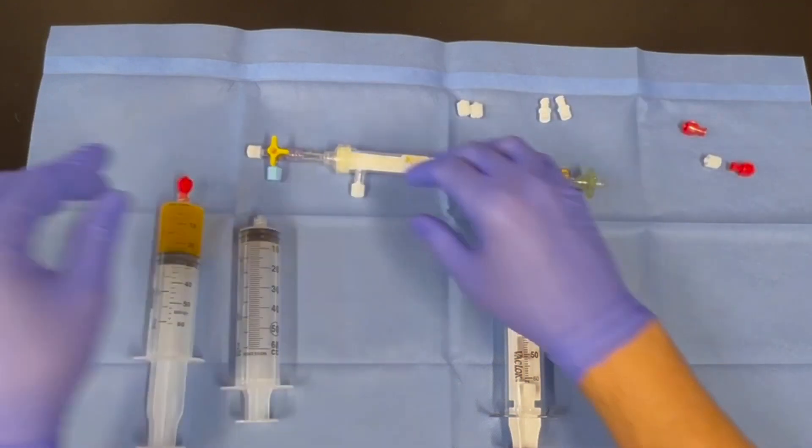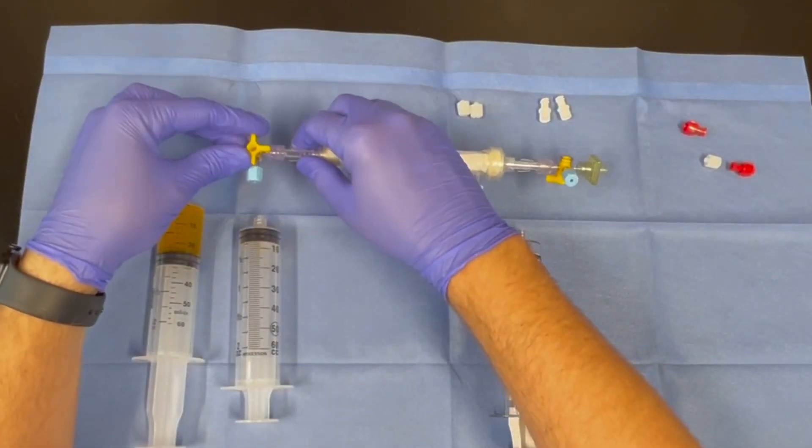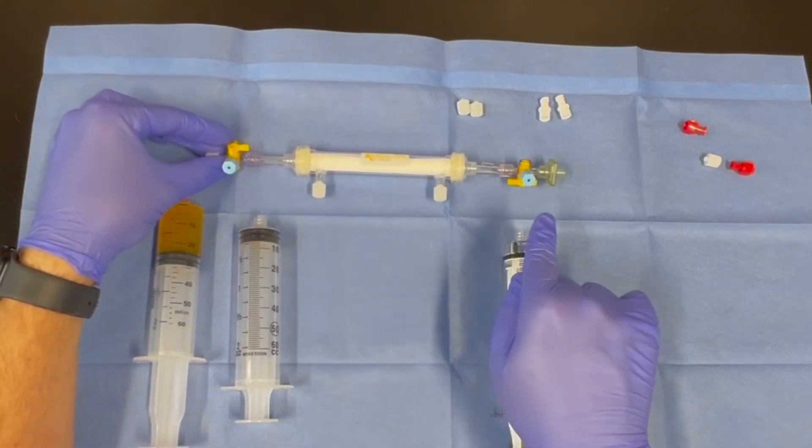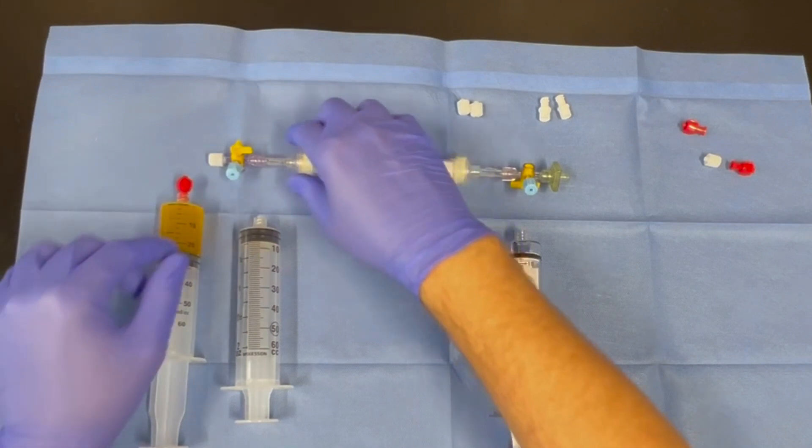Make sure that the 360 degree luer lock attachment is fully tightened. Remove the white cap from the end of the green filter. Move to the left side of the filter and confirm that the blue cap is angled slightly up towards you and tighten the 360 degree luer lock attachment.